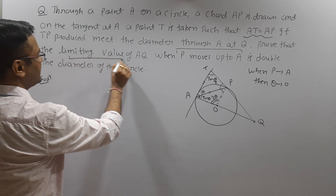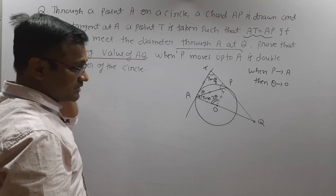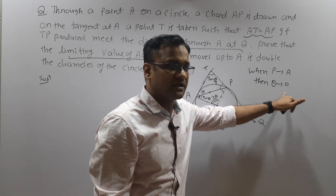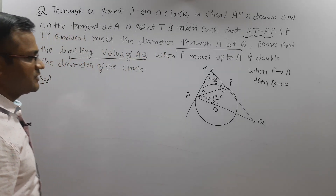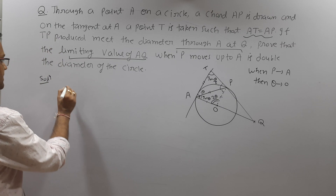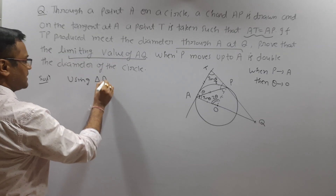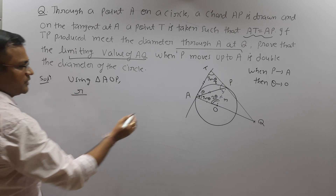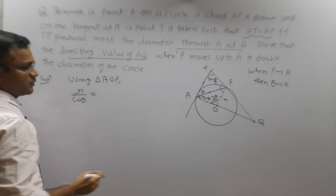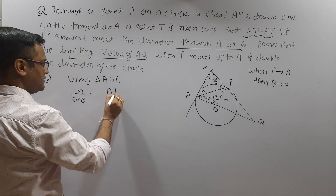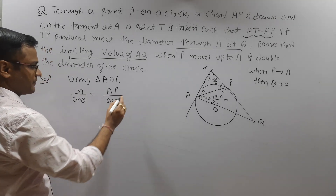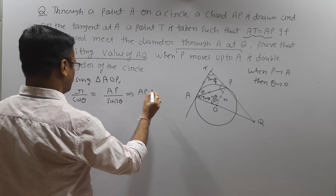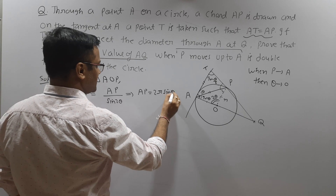Now, the question is to find the limiting value of AQ, so we have to represent AQ as a function of θ and then apply θ tending to zero. First, I am going to use triangle AOP. Using the sine rule in triangle AOP, if R is the radius of the circle, we can write R / cos θ = AP / sin 2θ. Since sin 2θ = 2 sin θ cos θ, cos θ cancels out. Therefore AP = 2R sin θ, which is also equal to AT.